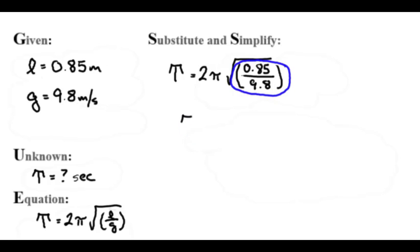When I do that, I get period equals 2 pi times the square root of 0.0867346.